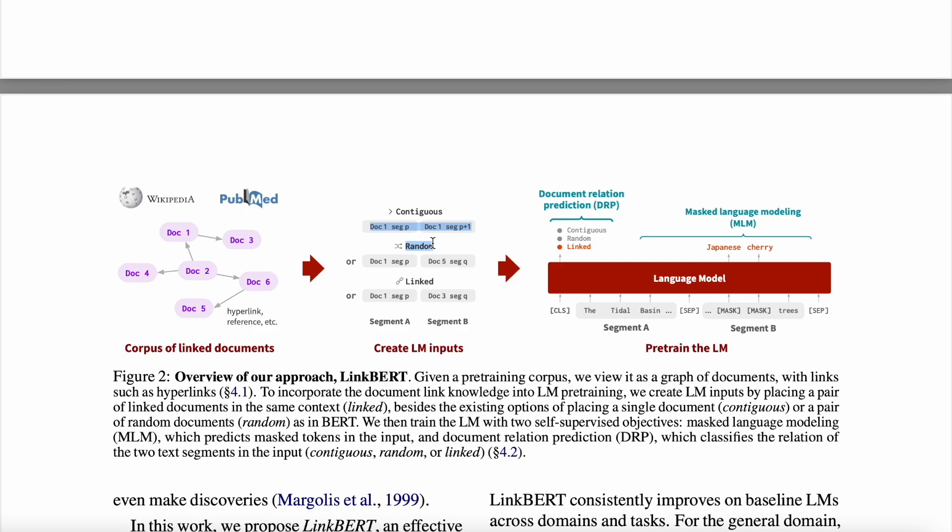So contiguous and random is essentially what we already had with NSP, right, which is next sequence prediction, which was the original objective of the BERT model. Because then this would resolve to a binary classification problem which NSP essentially did. But now we have the third way of creating the input, which is linked, because we are treating everything as a graph. So document one relates to document three, and then we pick segments from there. So this way the exchange of knowledge or the extrapolation of knowledge can be done.